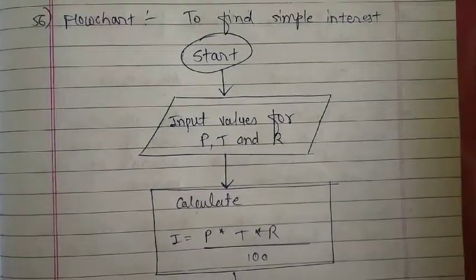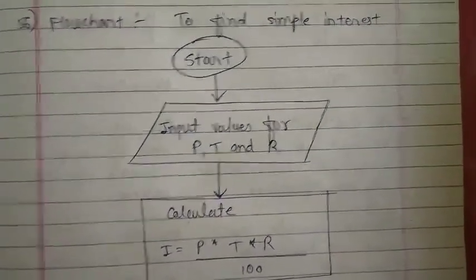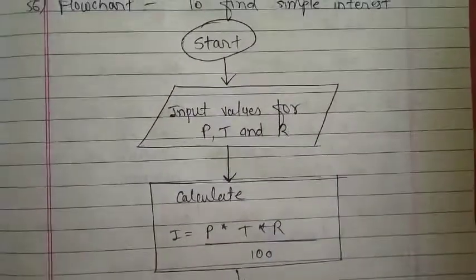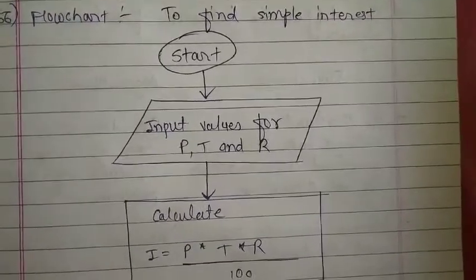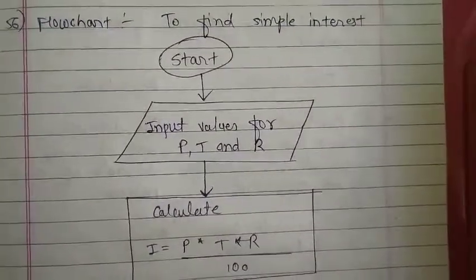Hello friends, welcome to my channel Pooja Patel. In this video, we will try to find simple interest using the formula P times T times R divided by 100. We will draw a flowchart. If you want to watch the video, subscribe to my channel.